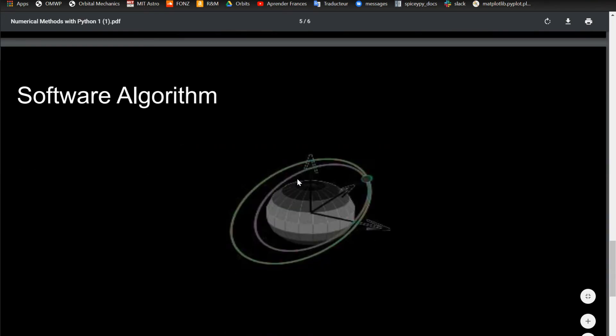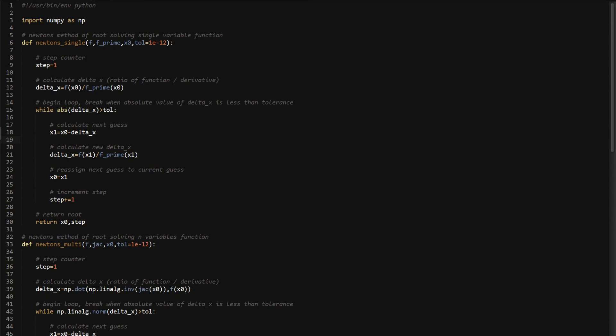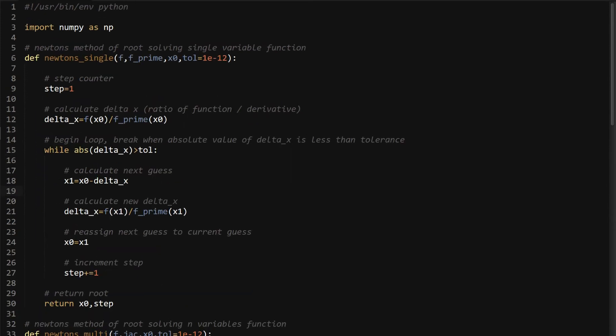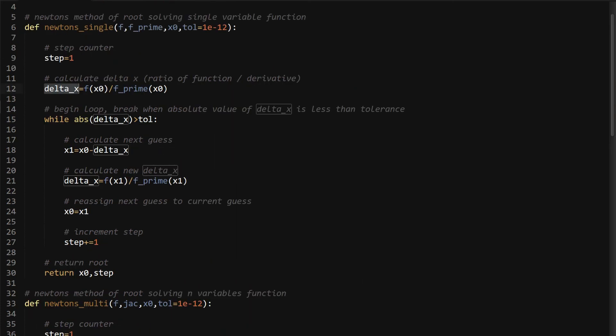As far as software algorithm, I'm going to go deeper into it next video, but here's just the Python version of how to do this. The inputs of the function, I call it newtons_single because there's Newton's multivariable as well. You have f, which is whatever function you have. You have your derivative, f_prime, and then your initial guess, x0, and then some tolerance. That can be whatever you want. You can calculate delta_x just like that. Then the while loop, your stop condition is, while the absolute value of the delta_x value is greater than tolerance, keep iterating. Once this value is less than tolerance, you can be done iterating. Just like I showed in the algorithm, calculate the next guess, calculate the new delta_x, and reassign the guess to the current guess, just how you put it in the software. You can have step if you want to or not, but basically just keep count of how many steps if you're interested to know how many steps it took to solve the problem.